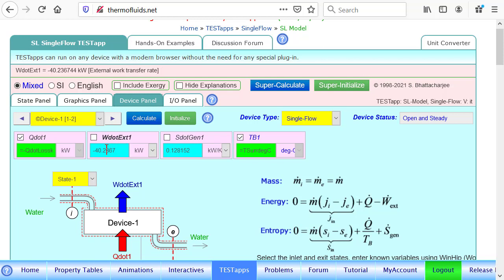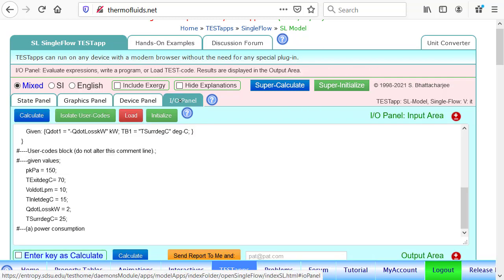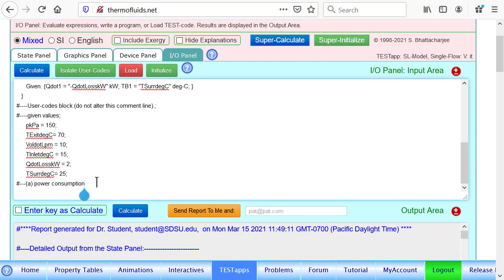And then after I calculate, it produces the power transfer which is negative because work is going in.